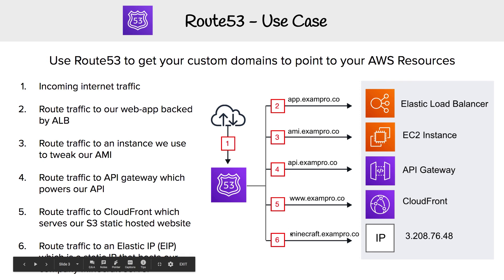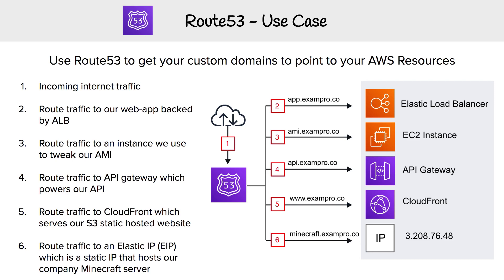And for fun and for learning, we might run a Minecraft server on a very specific IP — it would probably be an Elastic IP because we wouldn't want it to change — and that could be minecraft.exampro.co. So there's a basic example, but we're going to jump into all the different complex rules that we can do in Route 53.